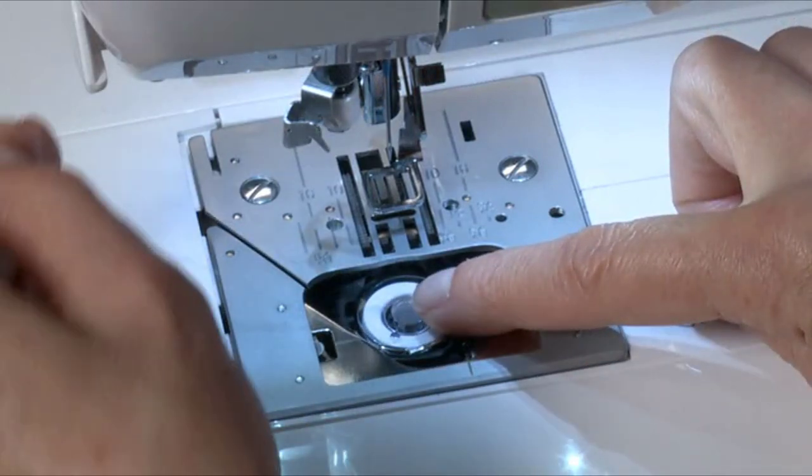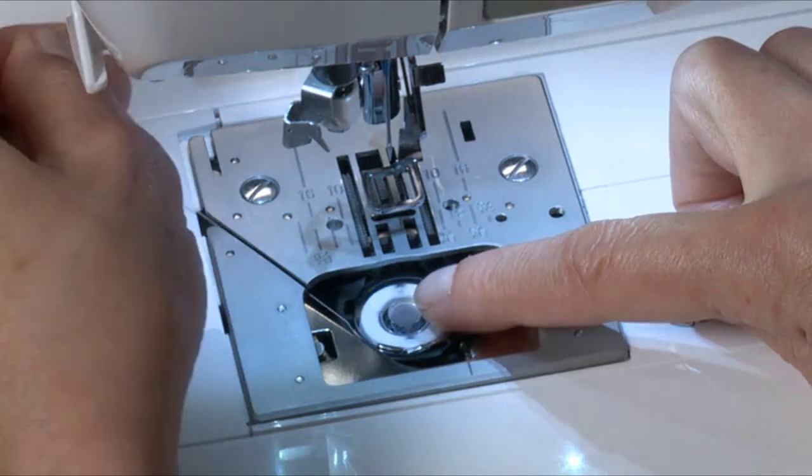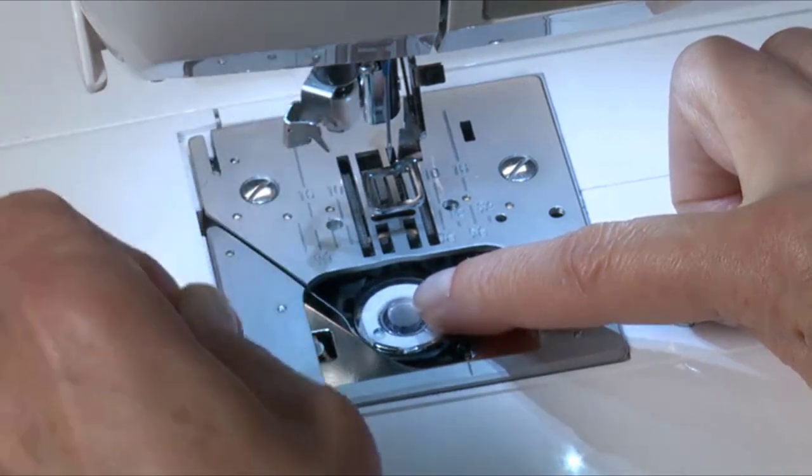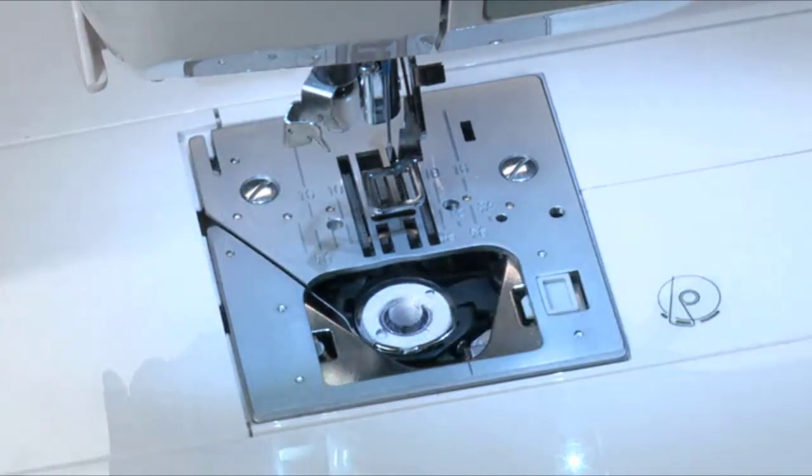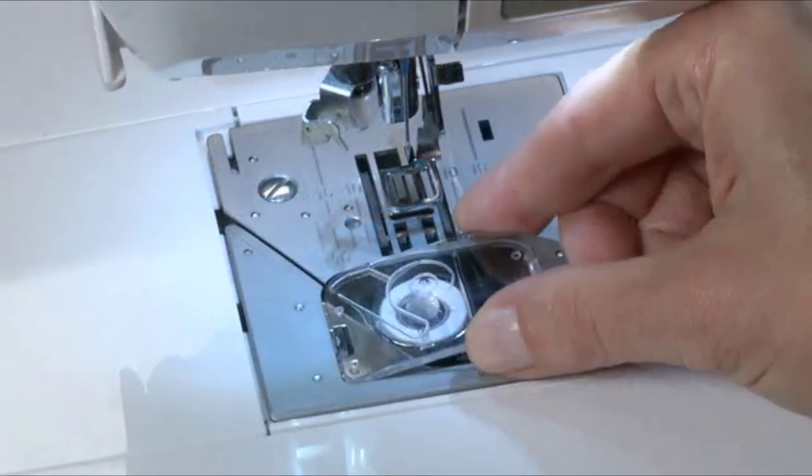With a finger held gently on top of the bobbin, pull the thread until it slips into this next slot. Now pull the thread along the groove on the needle plate until it is snipped with the thread cutter on the top left of the needle plate. Replace the bobbin cover.